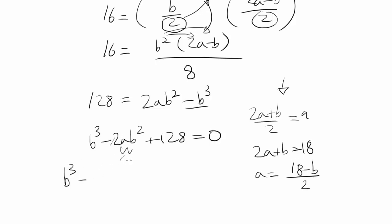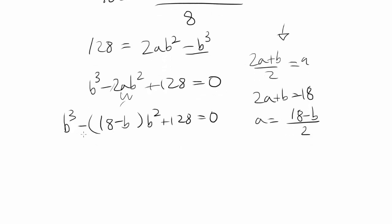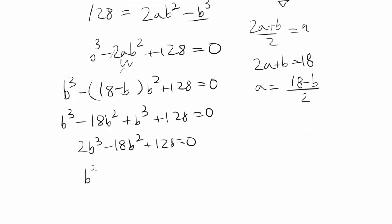So let's substitute that into it. So 2 and the bottom 2 cancel out. So you have 18 minus B times B squared plus 128 is 0. So you have B cubed minus 18B squared plus B cubed plus 128 is 0, also known as 2B cubed minus 18B squared plus 128 is 0. Let's divide by 2 on all sides. So B cubed minus 9B squared plus 64 is 0.